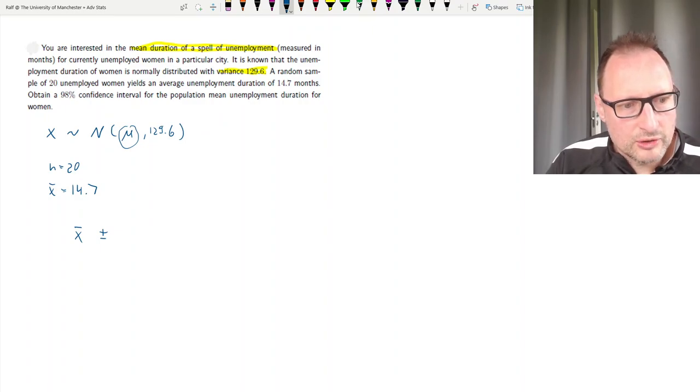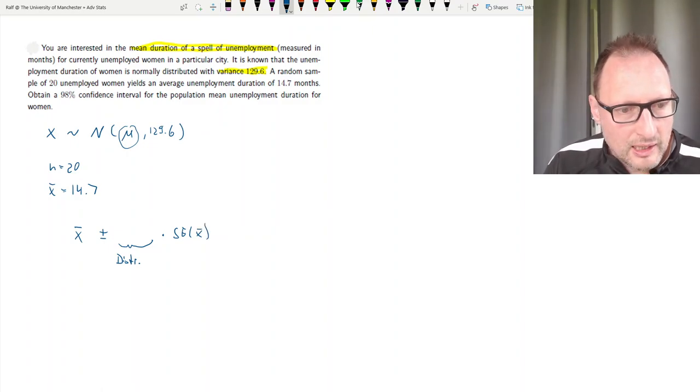So that comes from a distribution times the standard error of our sample estimate, that X bar, the standard error of X bar. Now, where that distribution value comes from, that now depends on how X bar is distributed.